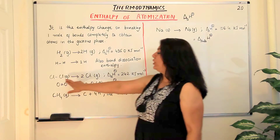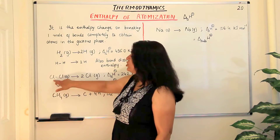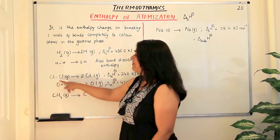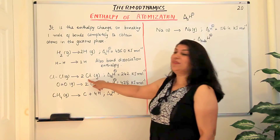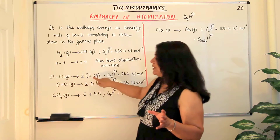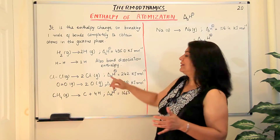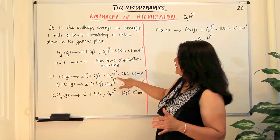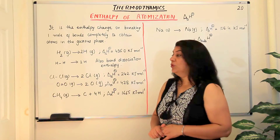Similarly, you have a molecule like chlorine. In Cl₂ the two chlorine atoms are attached by a single bond. If we have one mole of chlorine molecules that break to give us two moles of chlorine atoms — again both in the gaseous state — then the enthalpy of atomization, which is also the bond dissociation enthalpy, is 242 kilojoules per mole.